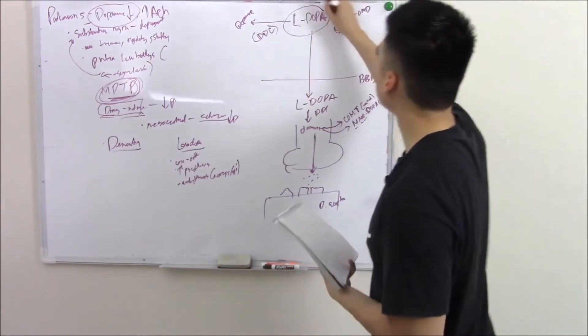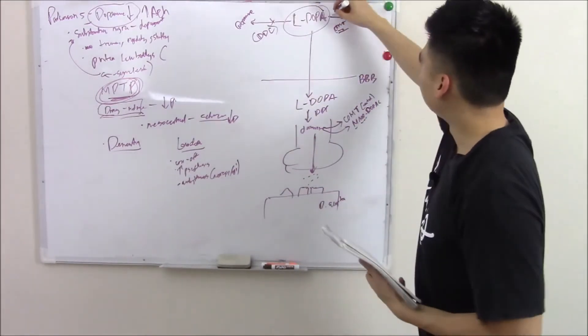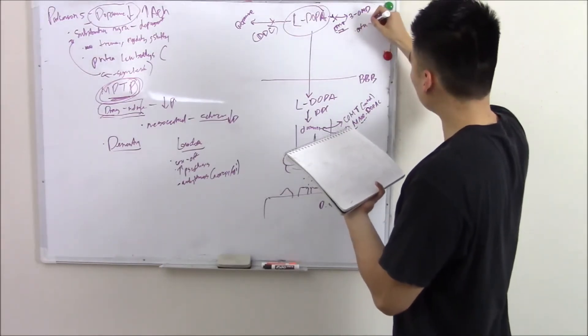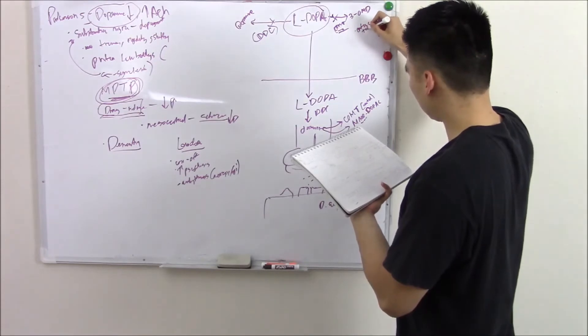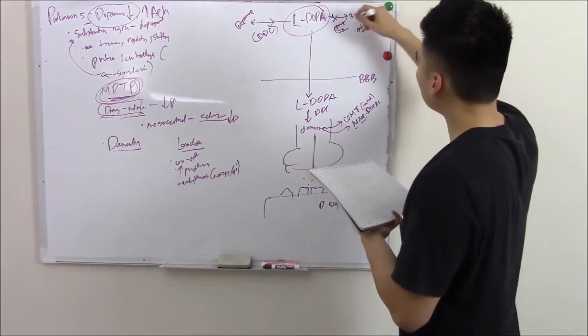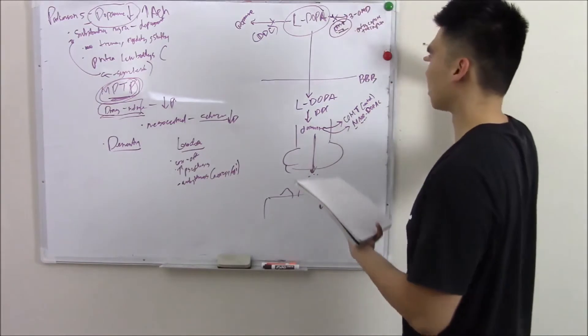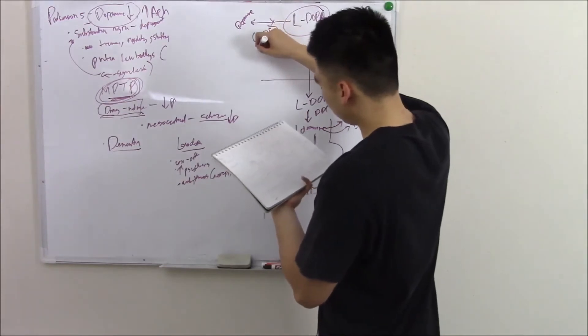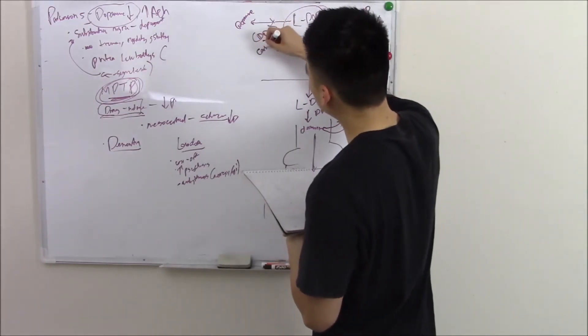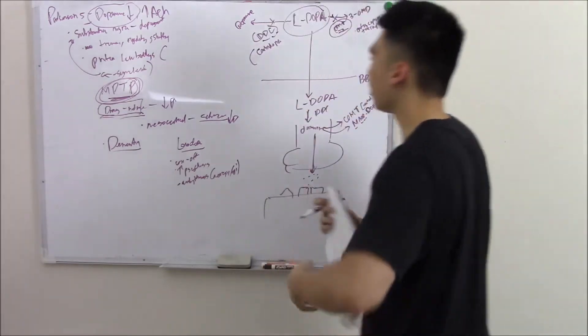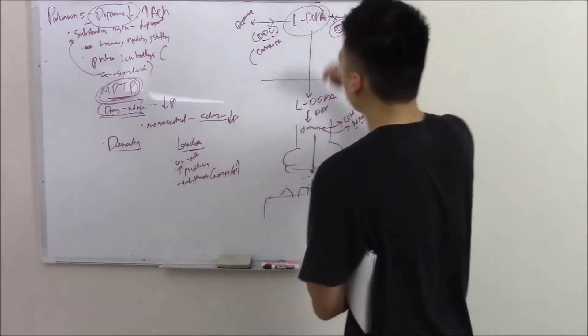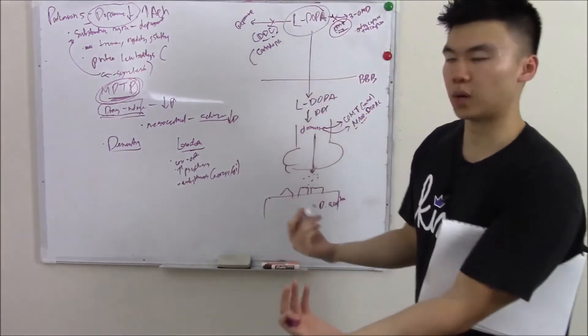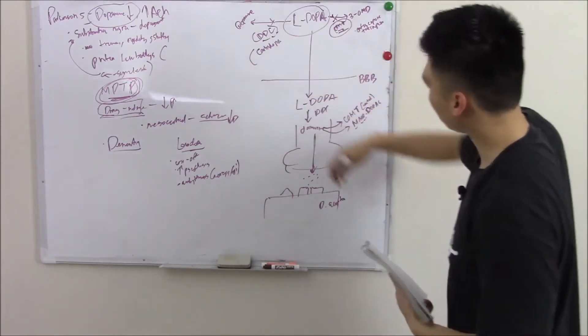How about blocking these two pathways? Wouldn't that be a good idea? We can block COMT peripherally and DDC. And this will be carbidopa. One of the most common drug combinations is giving levodopa carbidopa. By giving levodopa carbidopa, we kind of increase the chances of it going to our blood-brain barrier.